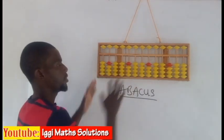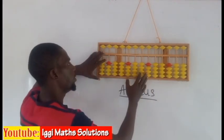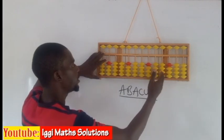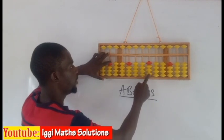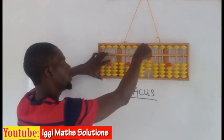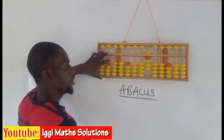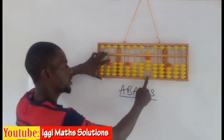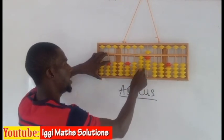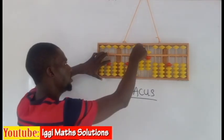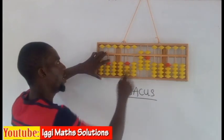Depending on the rod, each four beads determine their value depending on the place value. For example, if this is your unit, we have four units here and the upper bead is five, so we have nine units in the unit rod. If this is your tens, we have four tens meaning forty, and this one is the same as five tens, therefore we have ninety.